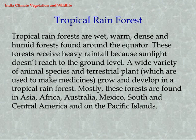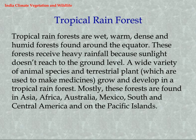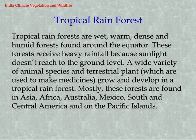Tropical Rain Forest: Tropical rain forests are wet, warm, dense and humid forests found around the equator. These forests receive heavy rainfall and sunlight doesn't reach the ground level. A wide variety of animal species and terrestrial plants, which are used to make medicines, grow here. Most of these forests are found in Asia, Africa, Australia, Mexico, South and Central America, and on the Pacific Islands.